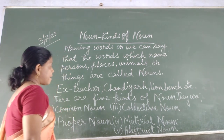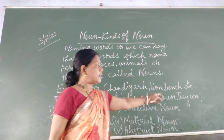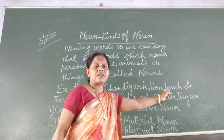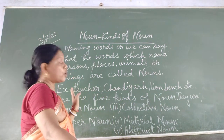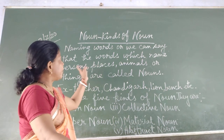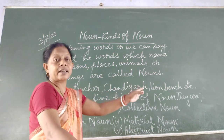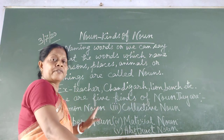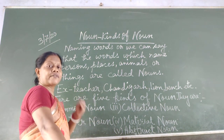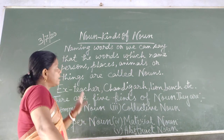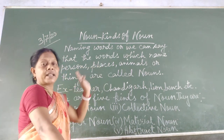For example: teacher, Chandigarh, lion, bench. Here I have just quoted one example of each — that is person, place, animal and thing. In the same way, you can quote several examples related to person, place, animal and things.